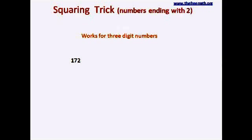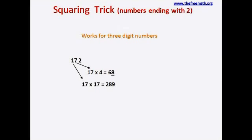Let's take an example: 172. We consider the first 2 digits from the left hand side. In this case those 2 digits would be 17. In the first step we multiply those digits by 4, so 17 times 4 is 68. In the second step we square 17, so 17 times 17 is 289.